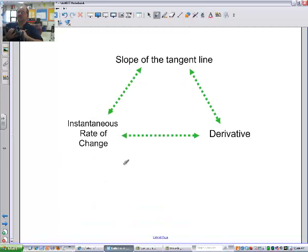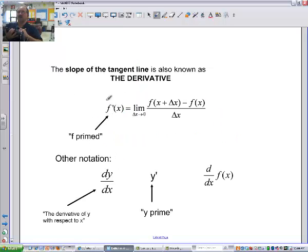And we also use slope of the tangent line, derivative, and instantaneous rate of change interchangeably. So anytime you hear any of those three phrases, we mean the same thing. We mean we're finding the derivative. We mean we're finding the slope of the tangent line. We mean we're finding the limit as delta x approaches 0 of the f of x plus delta x minus the f of x all over delta x. That's what it means.